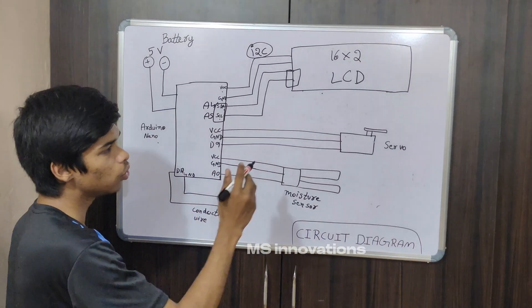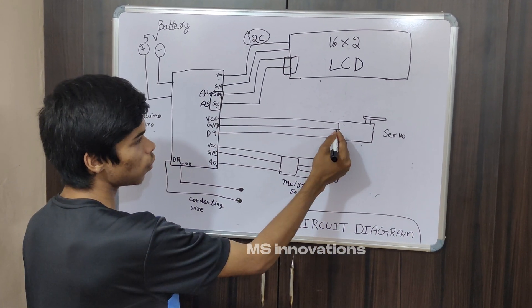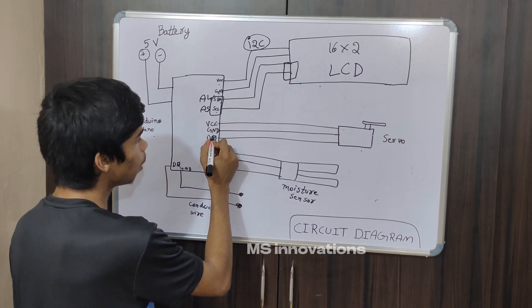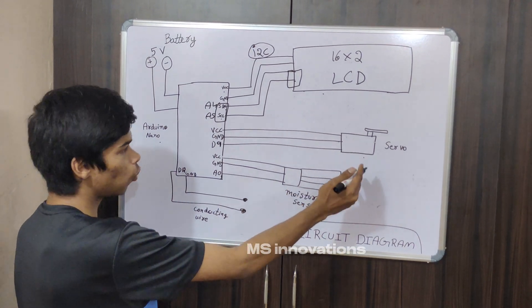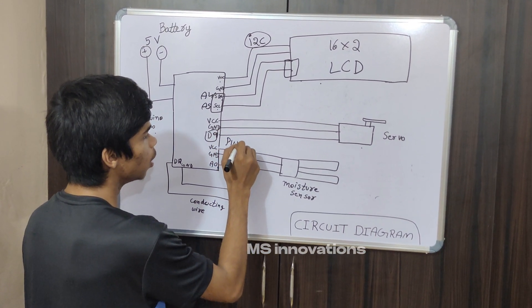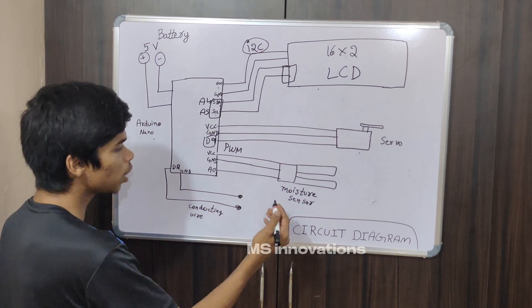Let's move on to servo motor. To power the servo motor, we'll connect VCC of servo motor to 5 volts of Arduino, ground of servo motor to ground, and digital pin 9 of Arduino is connected to signal pin of servo motor. This D9 is a PWM pin, so you can control the servo motor through Arduino using PWM pins.